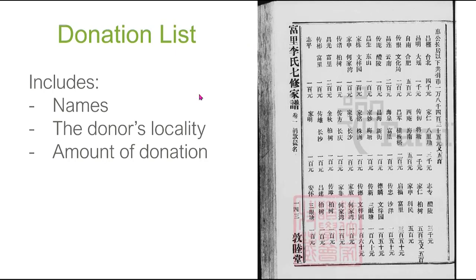Here we have a donation list that includes the names of donors, the locality of donors, and the amount they donated. For example, the first row is the name, the second row is the locality, and the third row is the amount of donation.